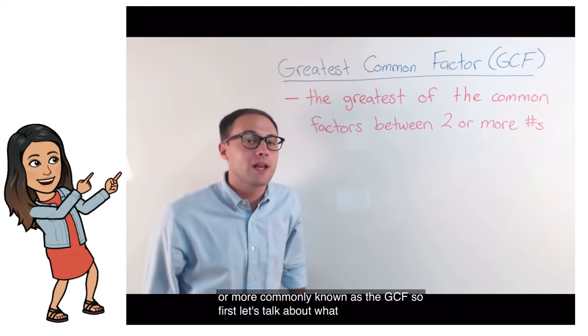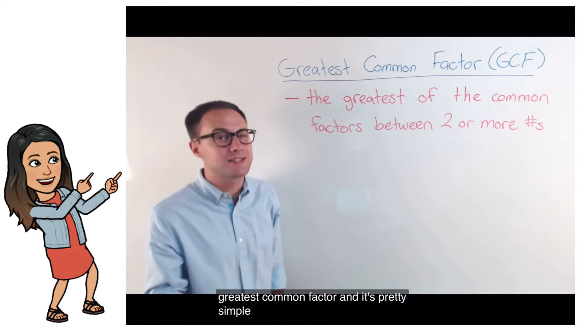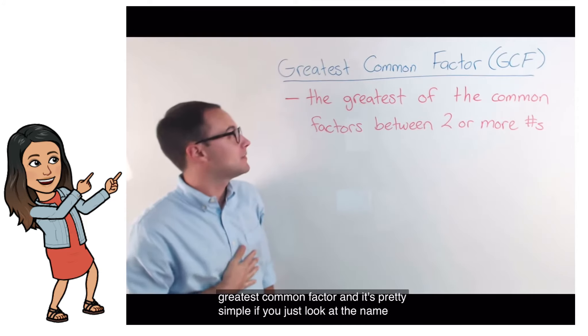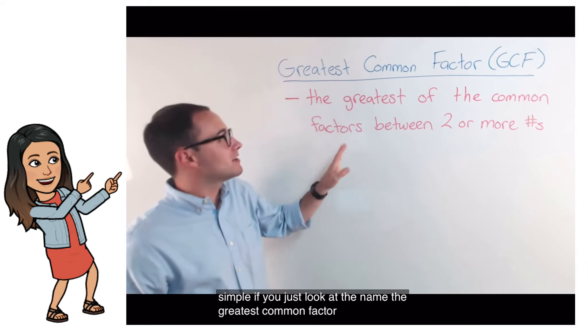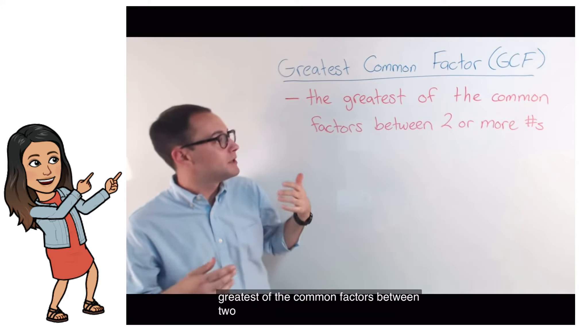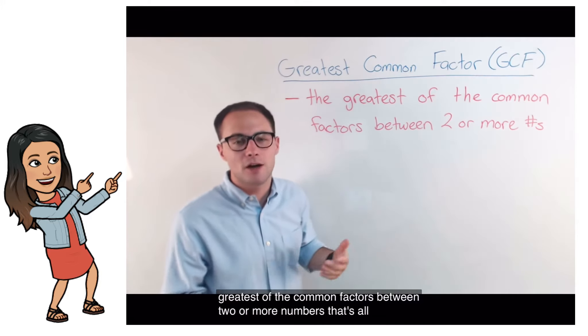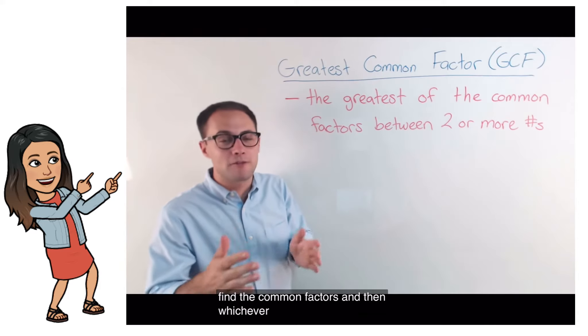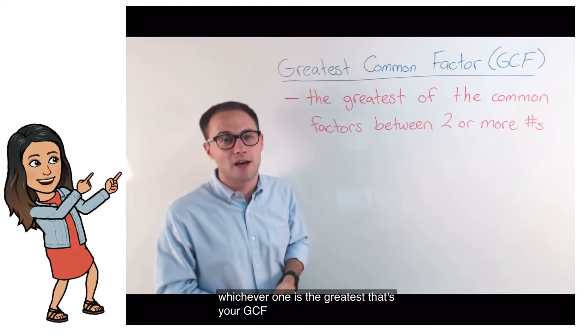So, first let's talk about what is the Greatest Common Factor, and it's pretty simple. If you just look at the name, the Greatest Common Factor is just the greatest of the common factors between two or more numbers. That's all it is. You find the common factors, and then whichever one's the greatest, that's your GCF.